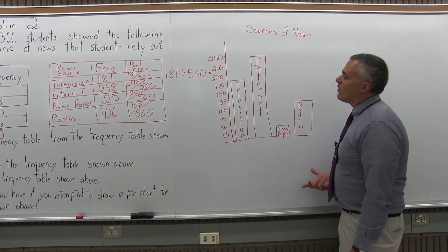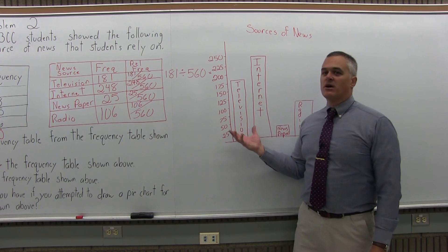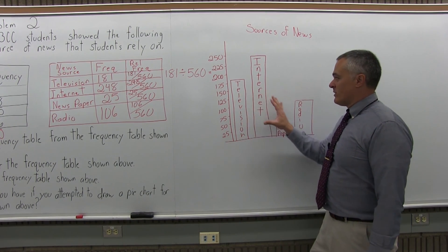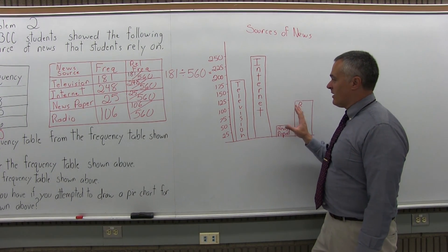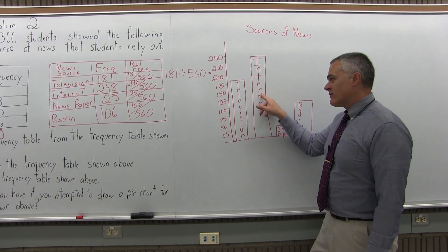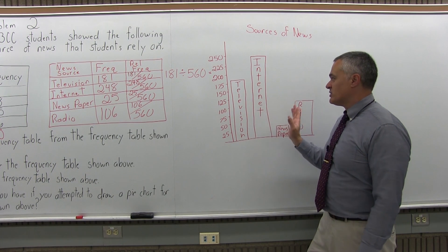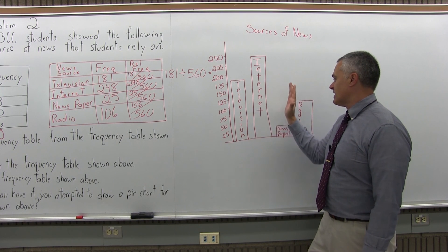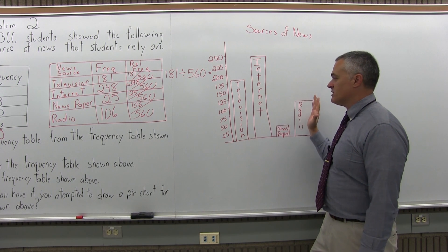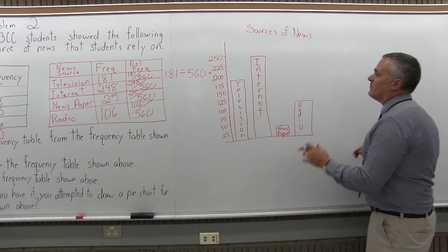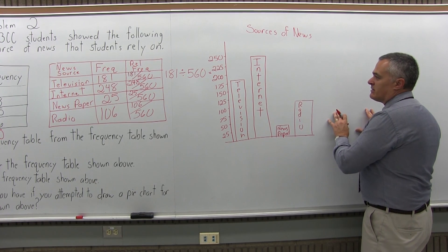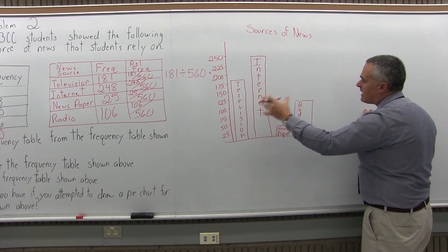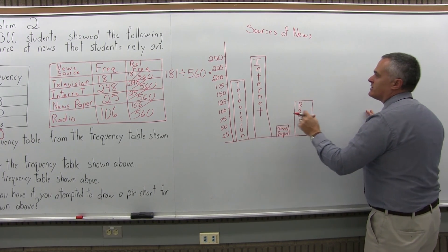For a Pareto chart, we have to arrange the bars in order. The way they're written here, the tallest bar is not first, so I would have to rearrange all of them. I would have to put the internet first, then television, then radio, then newspaper last.